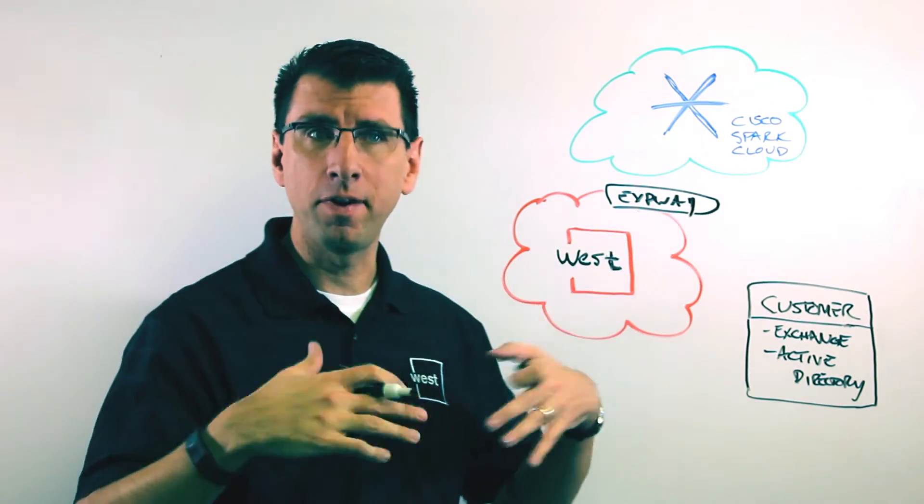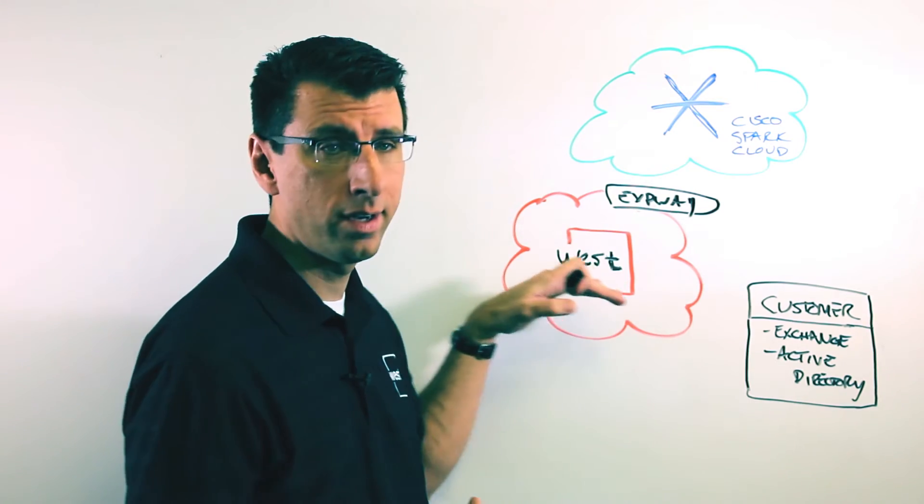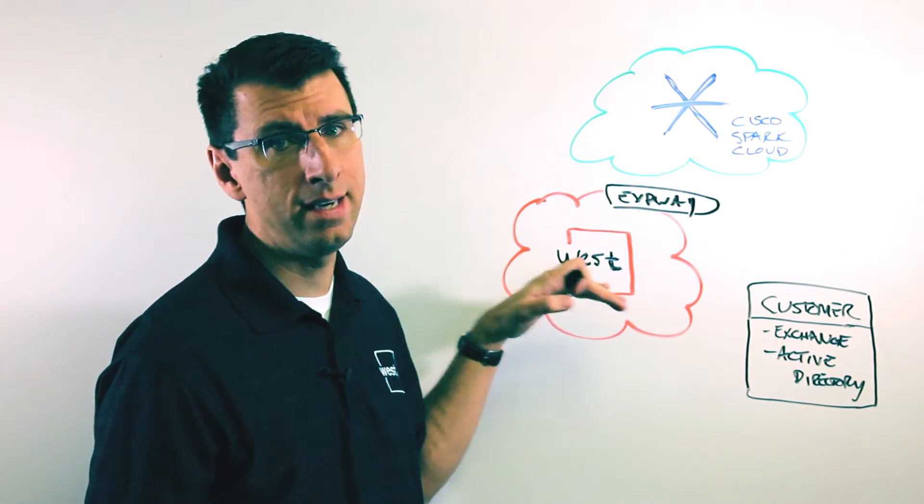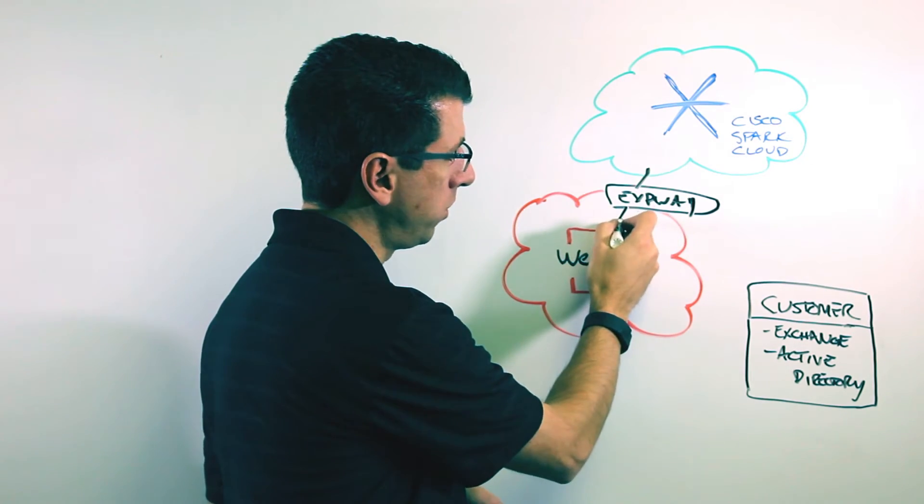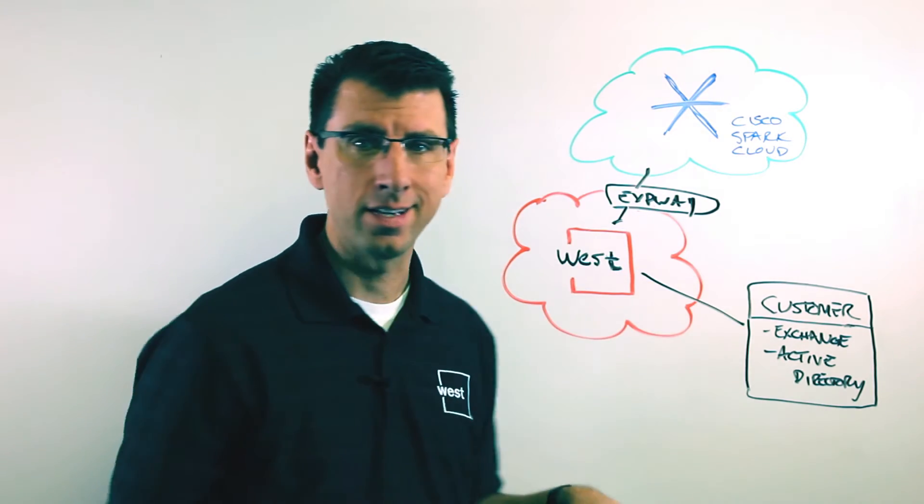It joins together basically as a firewall traversal technology that's going to join together the West VoiceMax CE system and the Cisco Spark Cloud. So Expressway is going to sit between these two and it's also going to route things out to the customer premises.